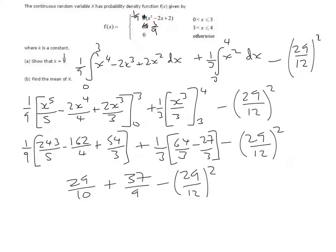And when we put that in our calculator and work it out, we'll get that the variance is 281 over 240.